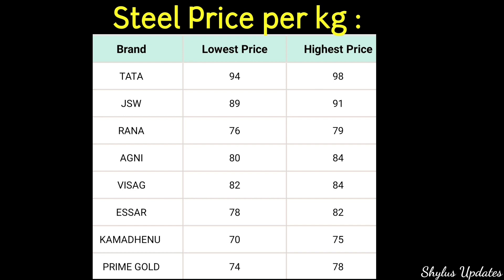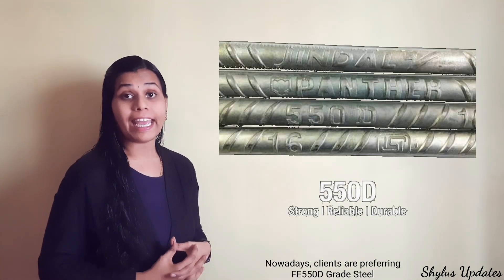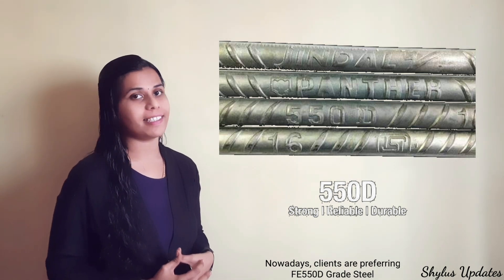Agni Steel is from Rs.82 to Rs.84. SR is from Rs.78 to Rs.82. Camdeno Steel is from Rs.70 to Rs.75. Prime Gold is from Rs.74 to Rs.78. When compared to last few months, Rs.122 has been reduced. Nowadays, clients are preferring FE 550D grade steel.